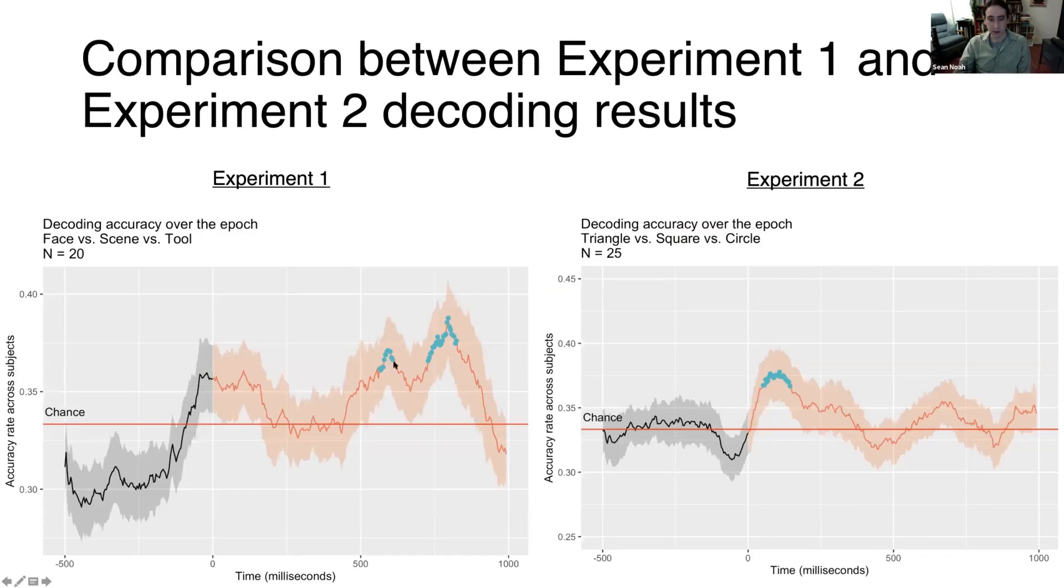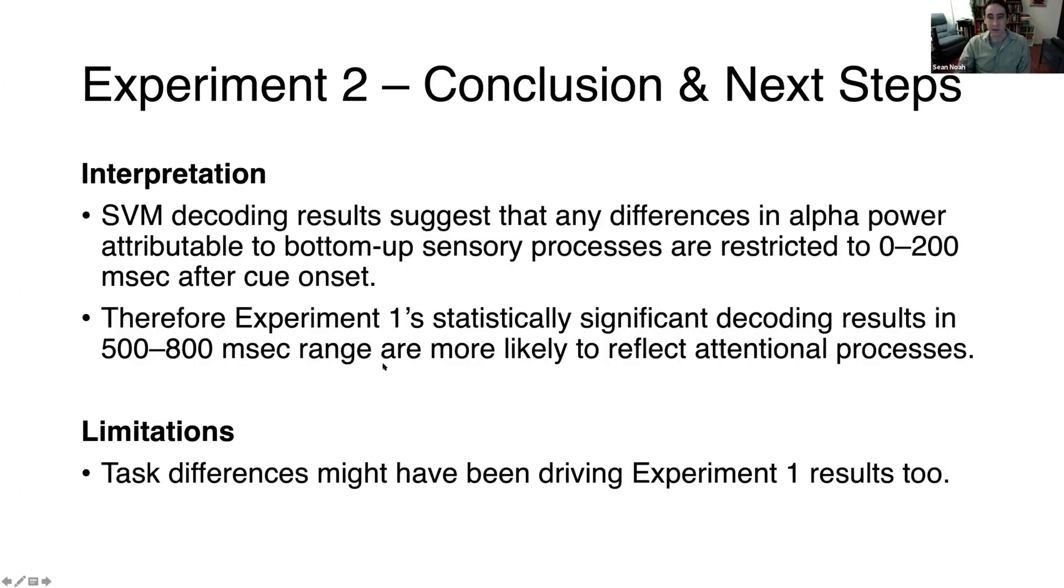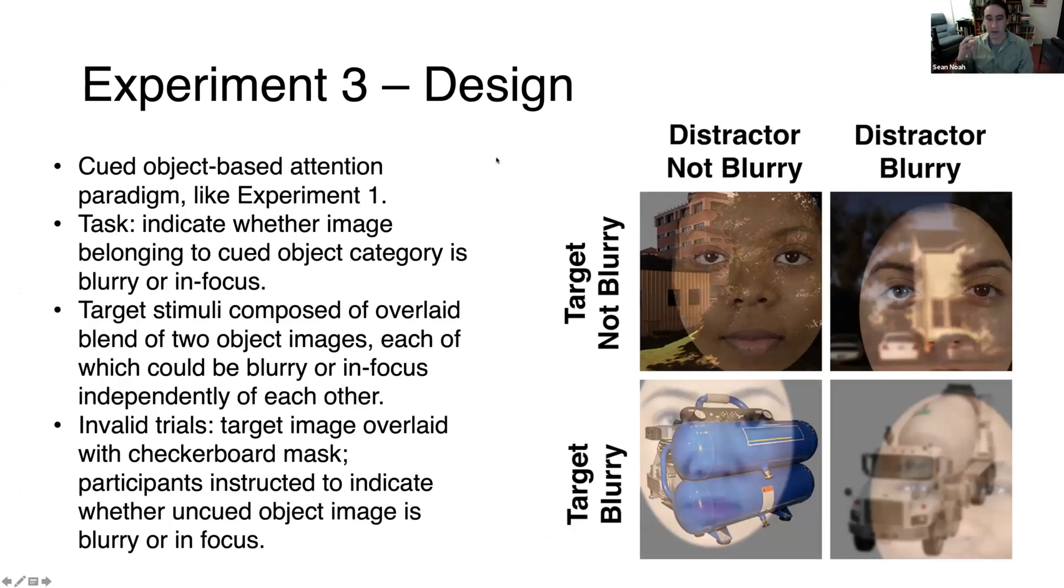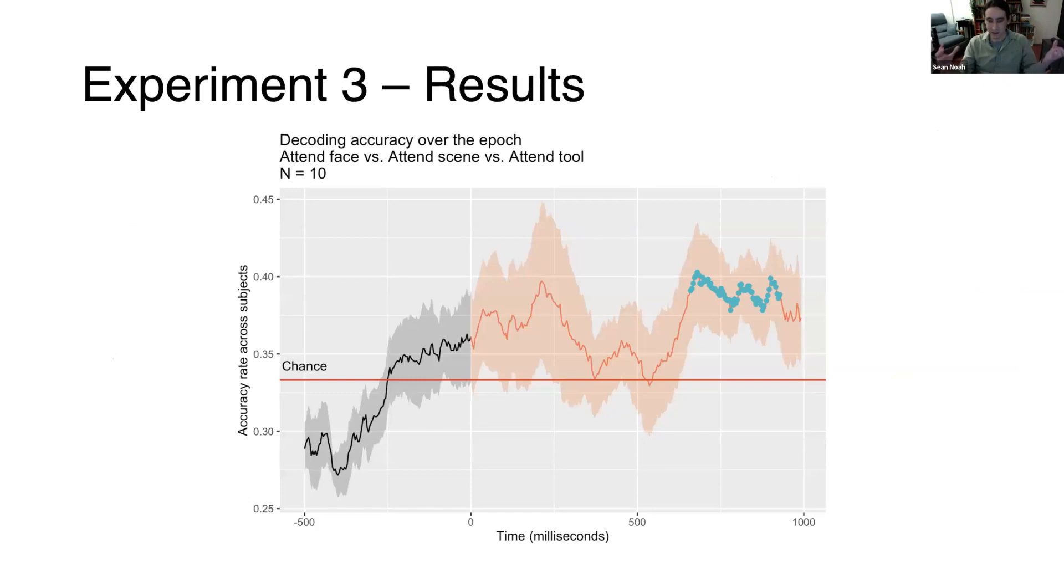In experiment three we wanted to test the possibility that we were just decoding different task sets between the different object conditions. We equalized the task across all three object categories. Whereas before, if you were cued to face, you knew you had to discriminate between a male and female face, and that's a fundamentally different kind of discrimination from discriminating a natural versus urban scene. That kind of task set might feasibly have been driving our decoding results. We wanted to rule out any kind of task set differences. Now the task is simply for whatever kind of object category you're cued to, you have to say whether it's blurry or in focus.